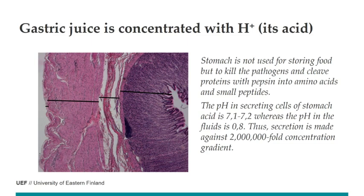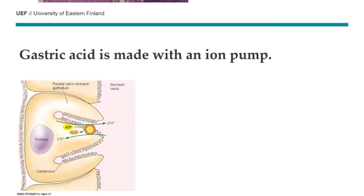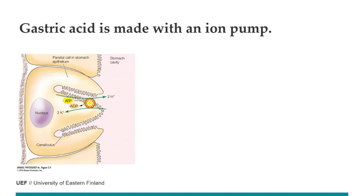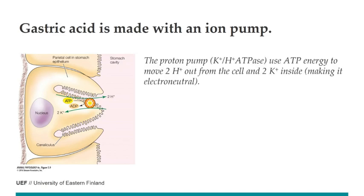In the gastric juice the pH is about 0.8, so there is about a 2-million-fold concentration gradient. This must be achieved by active transport, because a channel protein would move ions in the opposite direction. It is actually done with a proton pump that moves protons out of the cell and at the same time moves sodium inside the cell, and because it exchanges two positive charges for two positive charges, it is electroneutral — there is no net charge moved.